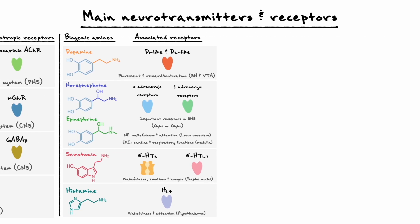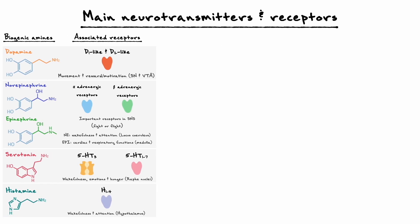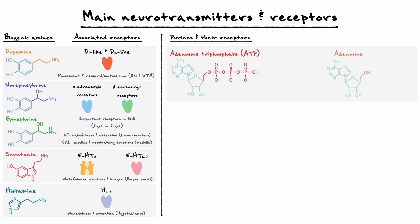With biogenic amines now covered, let's move on to the next type of neurotransmitter I want to cover. This class of neurotransmitters is referred to as the purines, and it includes adenosine triphosphate more commonly referred to as ATP, and adenosine which is the degradation product of ATP, or in other words ATP without its three phosphates.